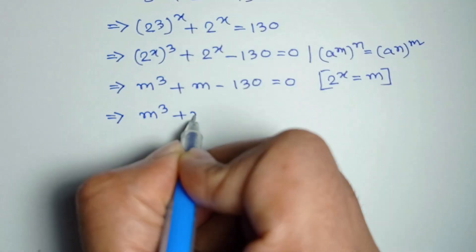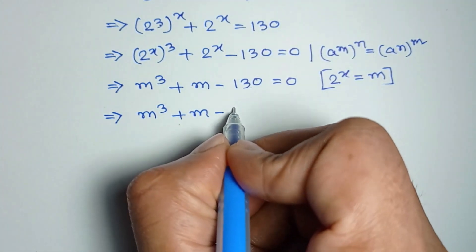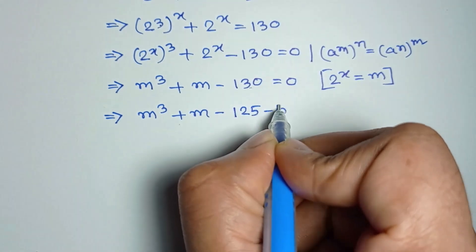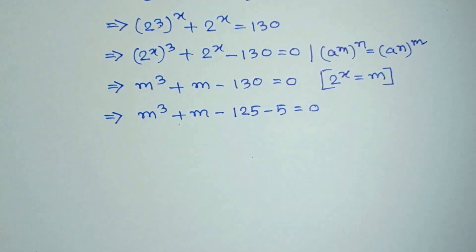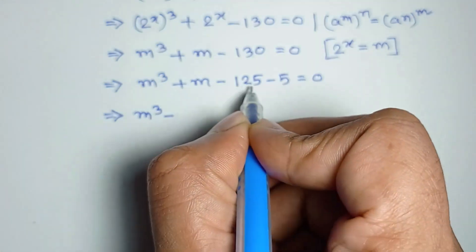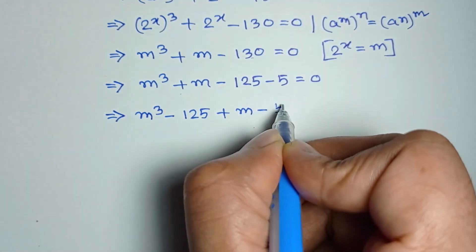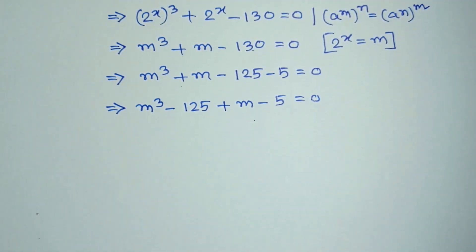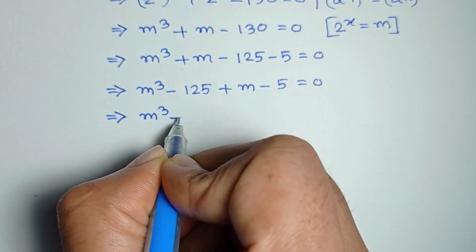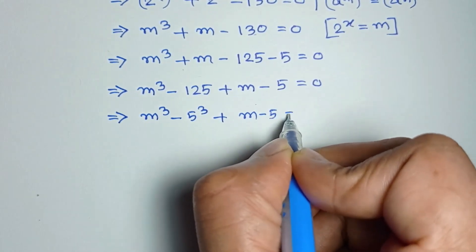The nearest cubic number to 130 is 125, so 130 can be written as 125 plus 5. This gives m cubed minus 125 plus m minus 5 is equal to 0, or m cubed minus 5 cubed plus m minus 5 is equal to 0.